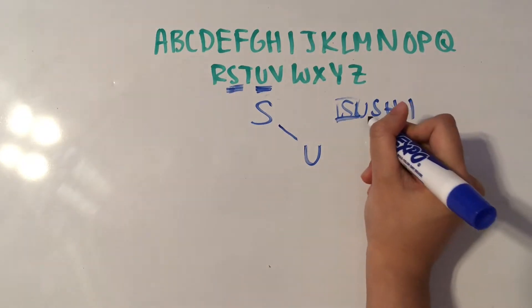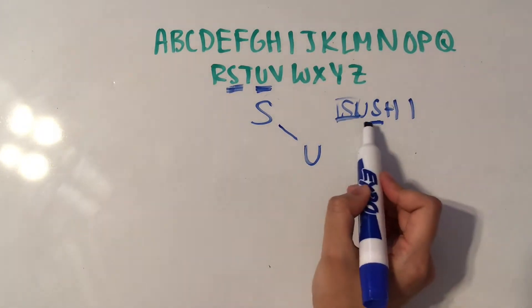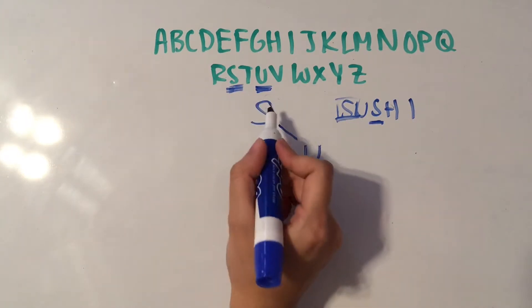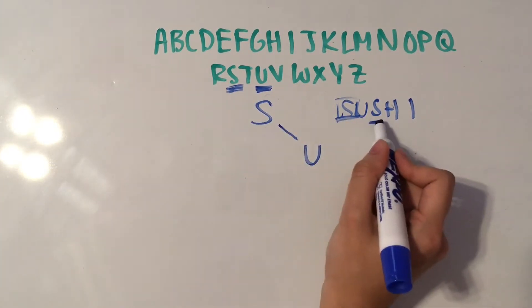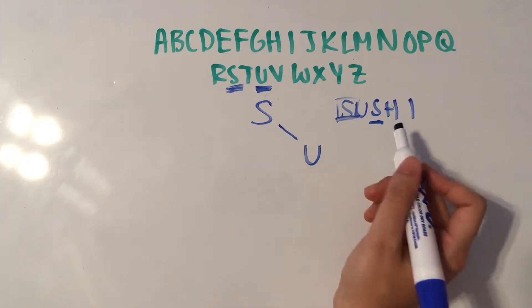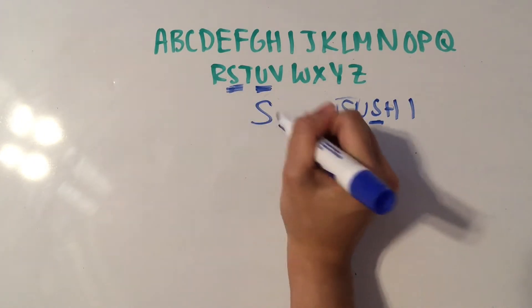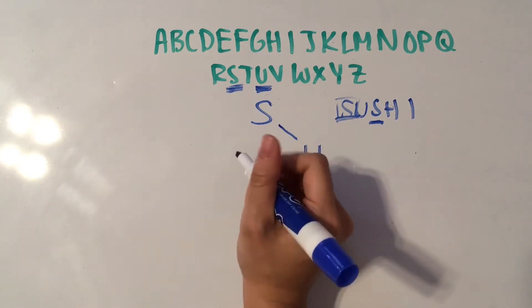All right, so now we have S, and then we go back to the top. So we look at S, and then we say, is S before or after or the same letter as this first letter? So obviously S and S are the same letters.